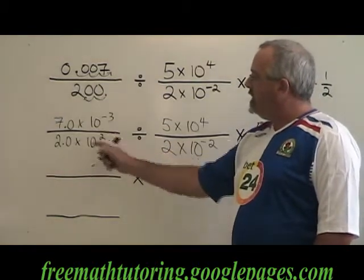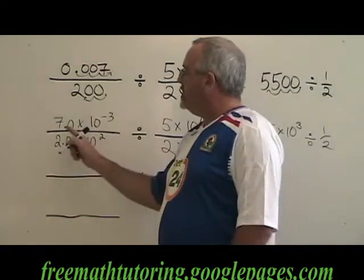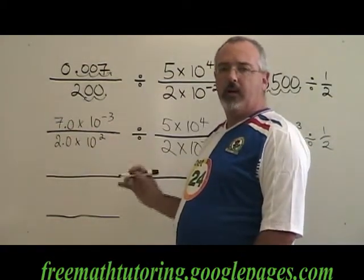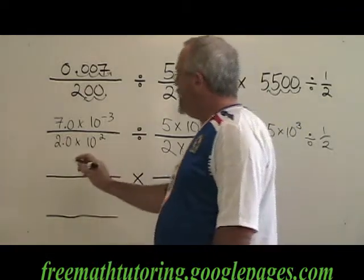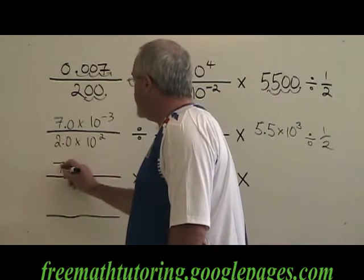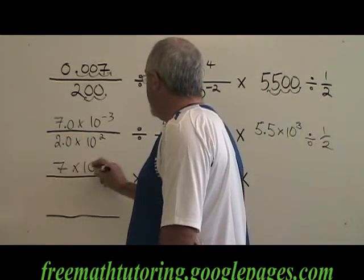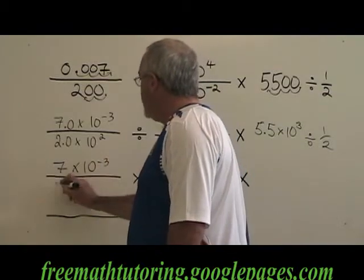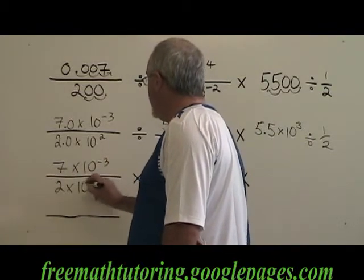I'm going to copy this fraction down and I'm going to get rid of the .0 to take away clutter from my calculations. So I have 7 times 10 to the negative 3 over 2 times 10 to the 2.